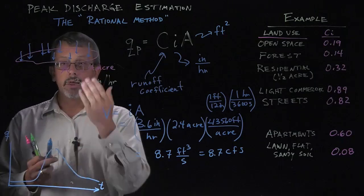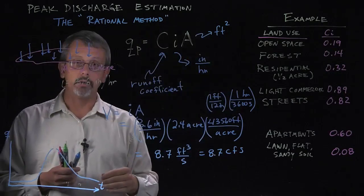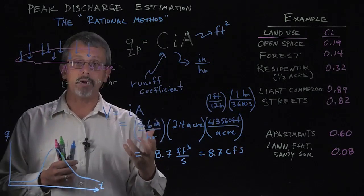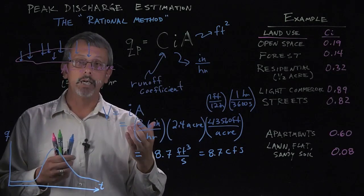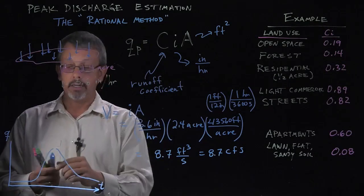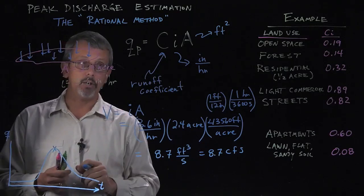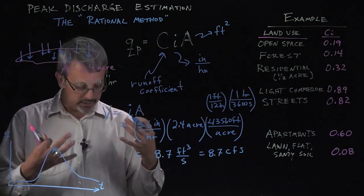Now notice this value here is the total amount of rainfall, but only some fraction of that rainfall ends up in runoff and ends up in runoff in the period of time necessary to contribute to this peak value. So we think about that as being some fraction.